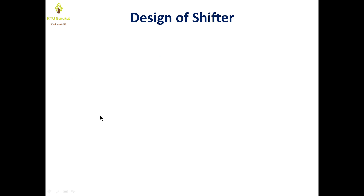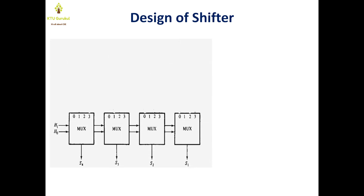How do we design the shifter? We will implement it using a multiplexer. This is the 4-bit shifter using a multiplexer. The outputs are S1, S2, S3, and S4. Now we will build the function table with the four possibilities: 0, 1, 2, and 3.